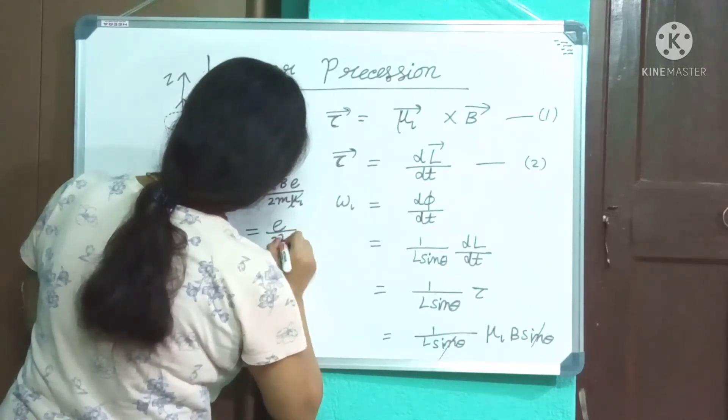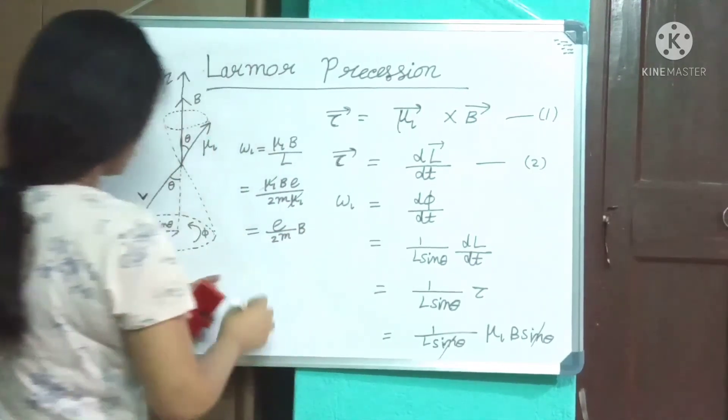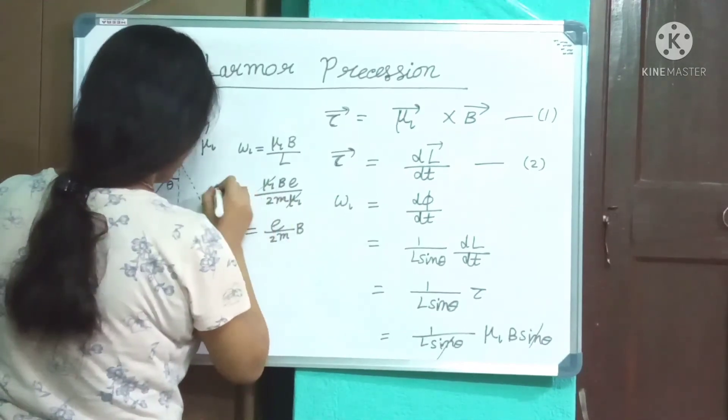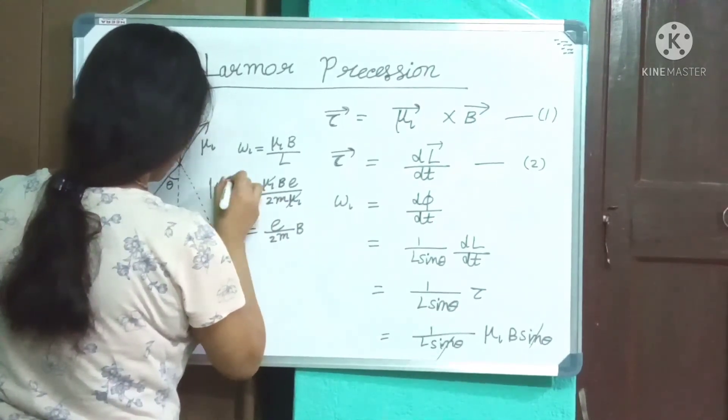Therefore, the Larmor frequency is |ω_L| equals eB/2m.